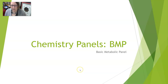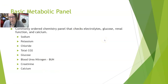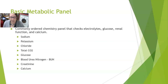Hi everybody, this is Dr. A. In this video on chemistry panels, we are going to talk about the basic metabolic panel, also known as the BMP. The BMP is a commonly ordered chemistry panel that checks electrolytes, glucose, renal function, and calcium. Its components are sodium, potassium, chloride, total CO2 (sometimes listed as bicarb), glucose, blood urea nitrogen (BUN), creatinine, and calcium. The order in which these are listed will vary based on your instrument and institution, but all components will be present.